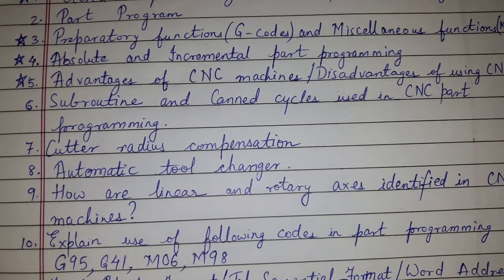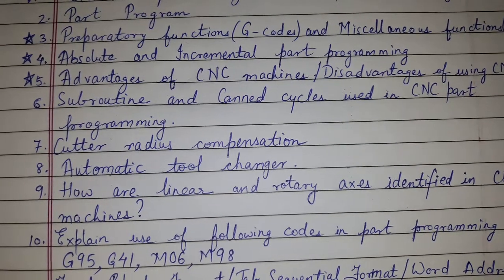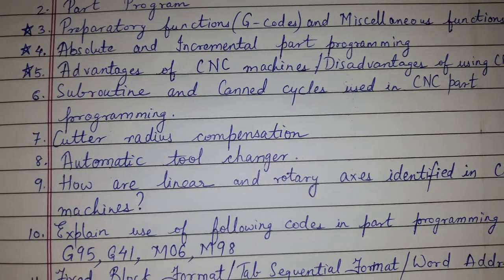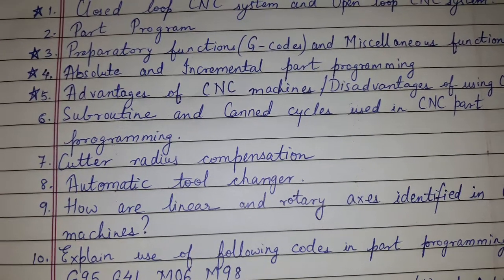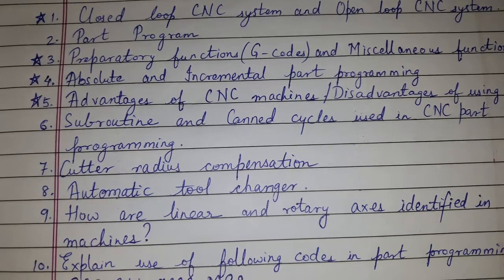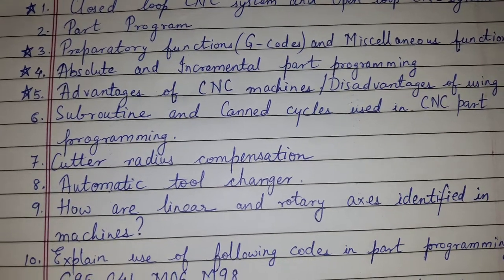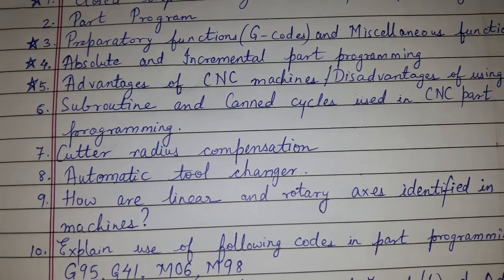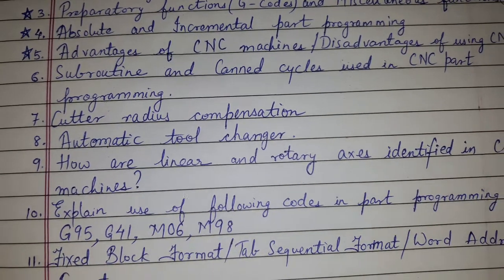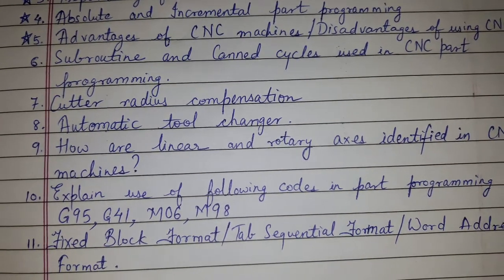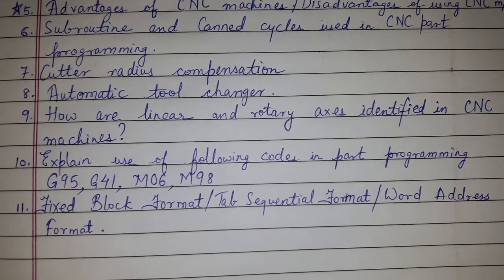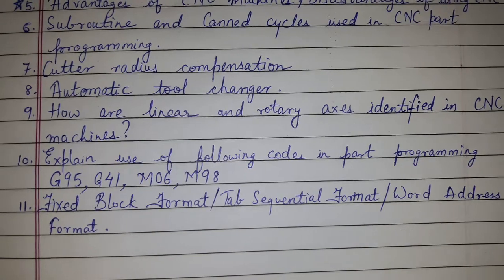Subroutine and canned cycle used in CNC part programming — the above questions can come as notes or as differentiation. Additionally, cutter radius compensation, automatic tool changer, and how linear and rotary axes are identified in CNC machines are important topics.